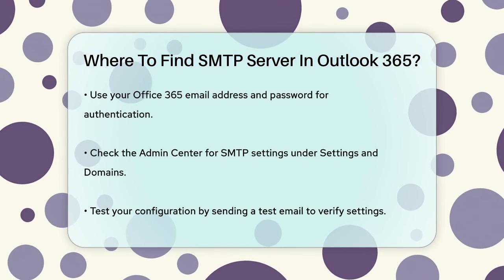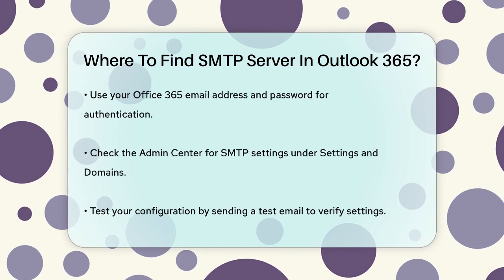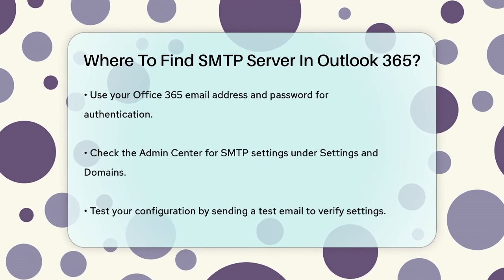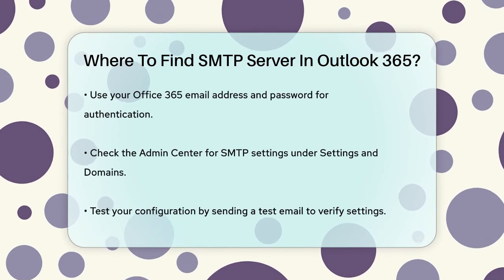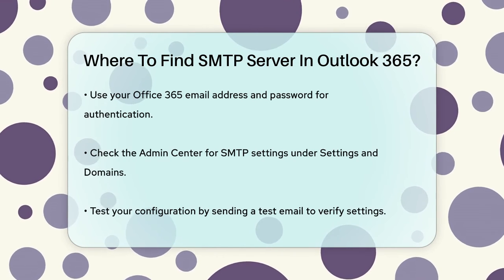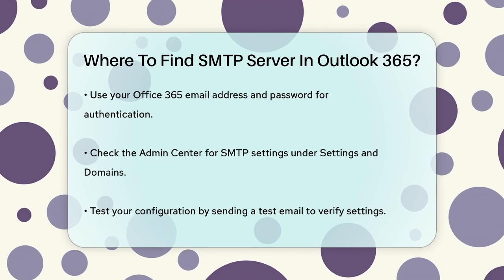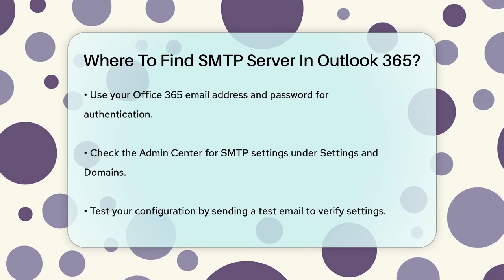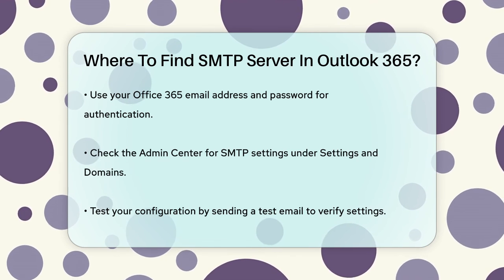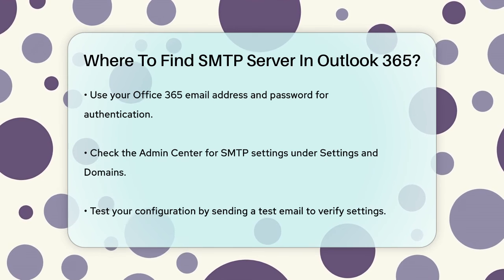To double-check, you can also navigate to the Admin Center in your Office 365 account, go to Settings, and then Domains. Here, you can search for SMTP settings and find the necessary information.